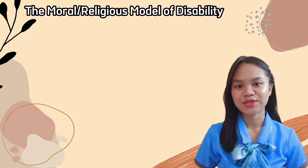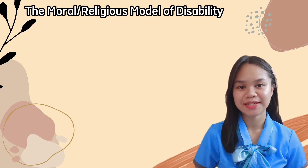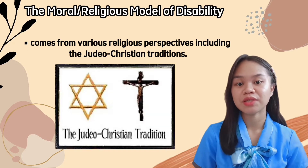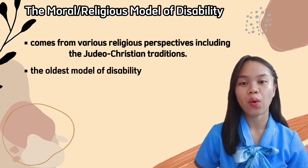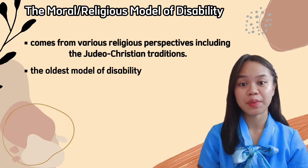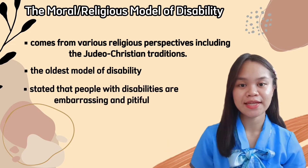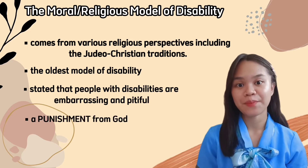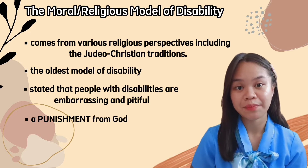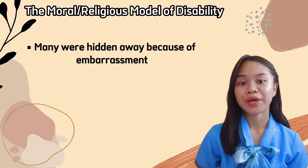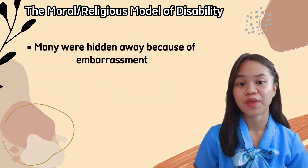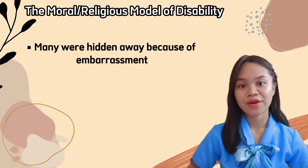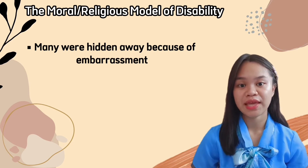The moral or religious model of disability comes from different religious perspectives, including the Judeo-Christian traditions, and is known to be the oldest model of disability. This model states that people with disabilities are embarrassing and pitiful — it is seen as a punishment from God because of a sin committed by that person. Many were hidden away because of the embarrassment, which meant they had no right to anything.